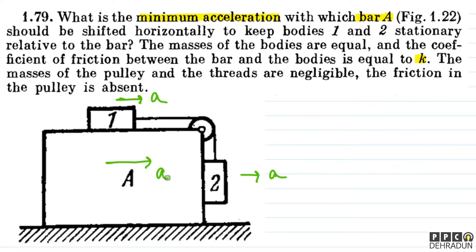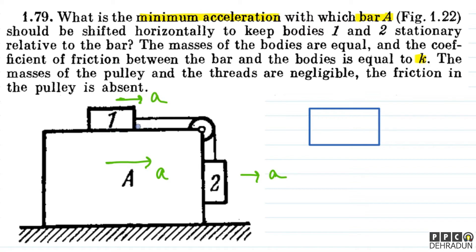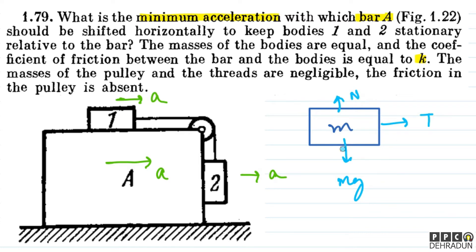Here we say that 'a' is the minimum acceleration of bar A moving horizontally. Since all three masses are the same, I denote them as M. Before making the free body diagram, let's look at block 1. The forces on block 1 are: tension T towards the right, weight mg downward, normal force to the right, and friction force.